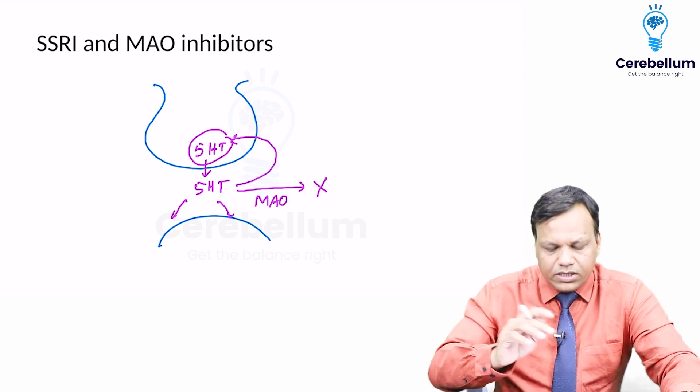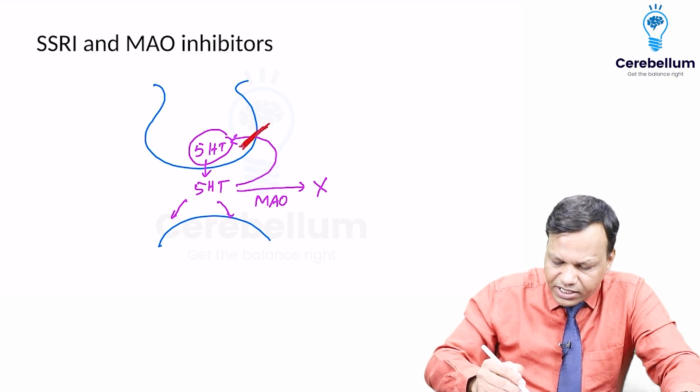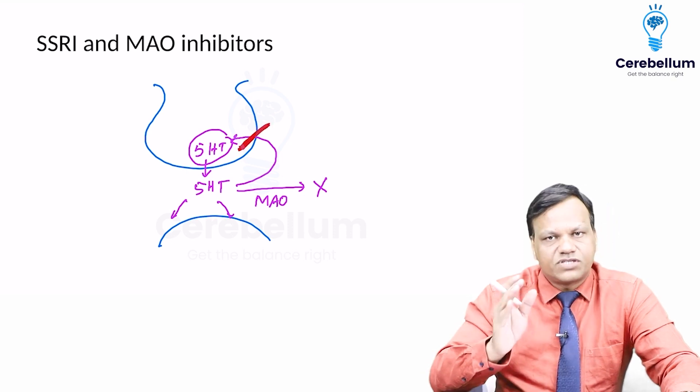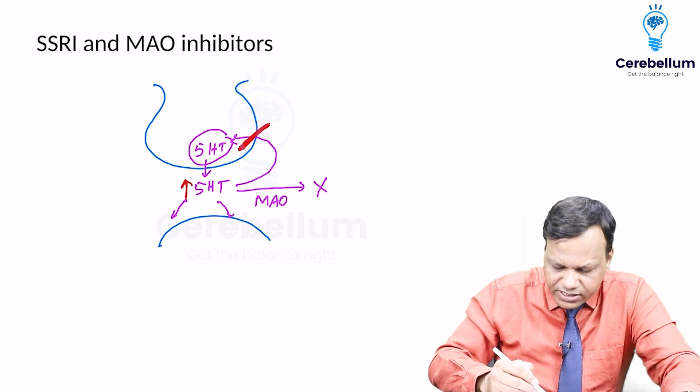If we give SSRI, it's a drug which inhibits the reuptake of serotonin. Selective serotonin reuptake inhibitor. So the level of serotonin increases.